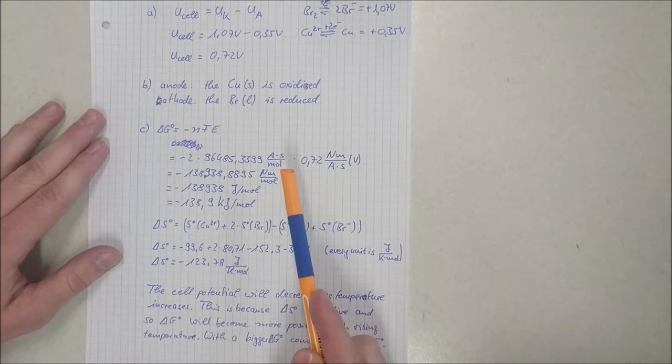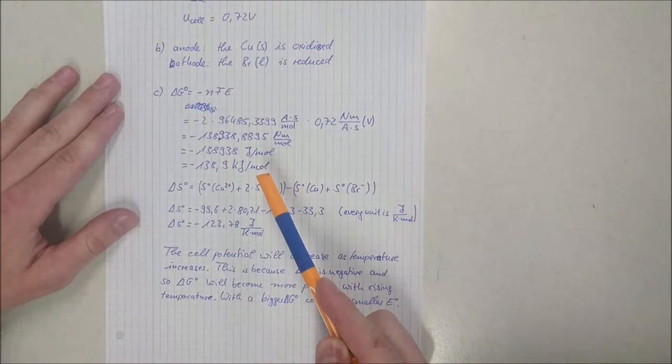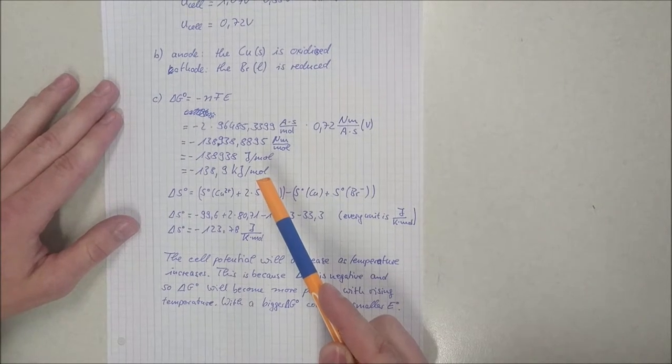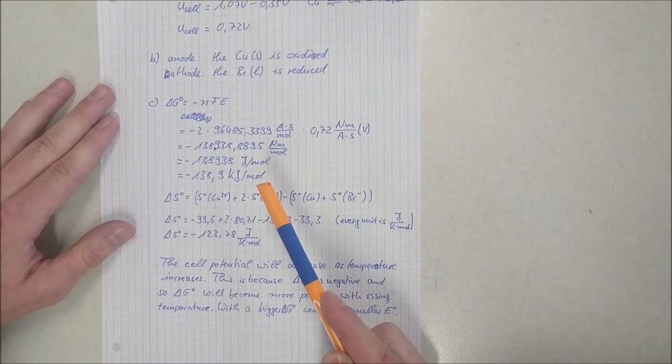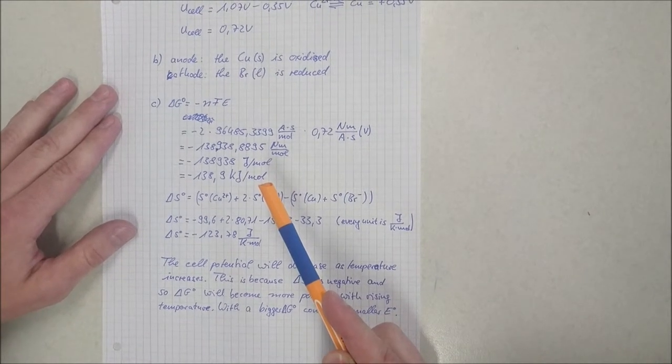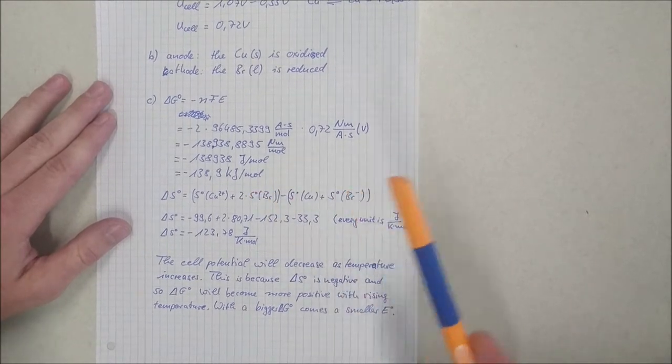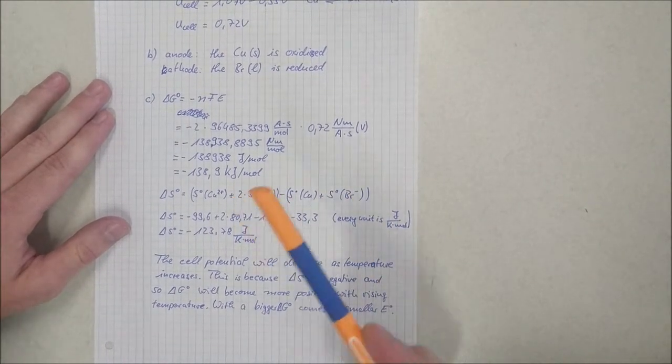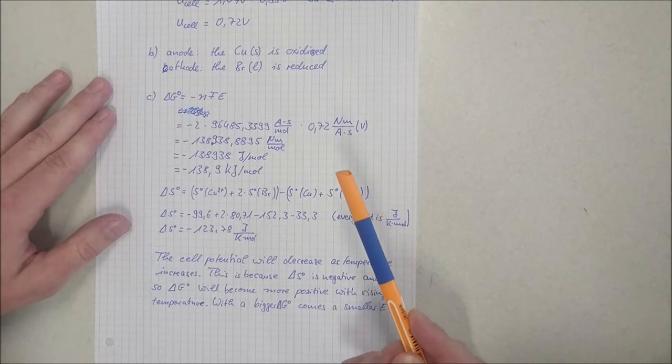The third task is more difficult. Using entropy values from Appendix C and the relationship between cell potential and free energy change, predict whether the cell potential increases or decreases when the temperature is raised above 25 degrees Celsius.